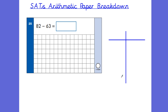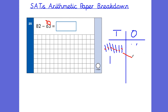The final question, number 25: 82 take away 63. Make the big number: 82 is eight 10s and two 1s. Take away 6 tens — cross those out. Now take away 3 ones but only have 2, so borrow another 10. Cross it out, move it into ones — now 12 ones. Take away 3 ones, leaving 9 ones. We've got 1 ten (10) and 9 ones, giving a final answer of 19.